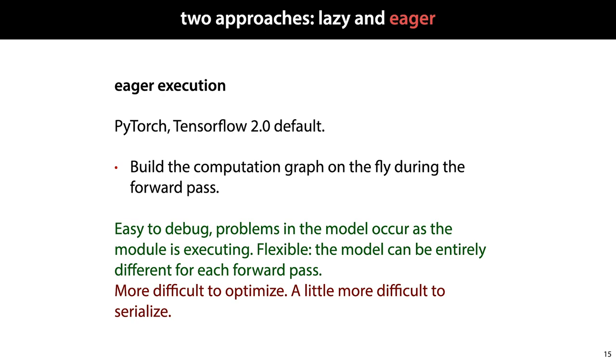The other approach is eager execution. It does not require us to pre-define the computation graph. We simply use programming statements to compute the forward pass, as we would in any other program, for instance by multiplying two matrices. The deep learning system then ensures that your matrices are special objects that keep track of the whole computation, so that when it comes time to do the backward pass, we know how to go back through the computation we just performed. This makes it easier to debug, because problems in the model occur as it is executing, and it's more flexible, because the model can do different things based on which data it encounters. It is, however, more difficult to optimize, and a little bit more difficult to serialize. Since eager execution seems to be fast becoming the default approach, we will focus on that in the rest of the lecture, and describe in detail how an eager execution deep learning system works.